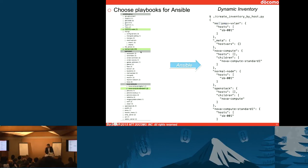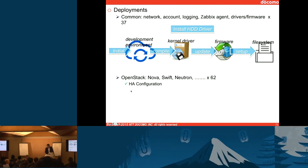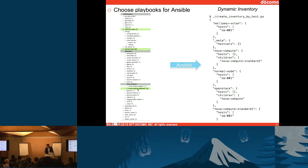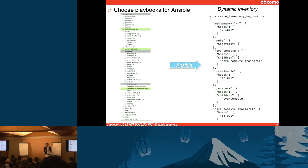As you can see, the normal node and Nova Compute Standard 1 appear in the inventory. Once operators select the playbooks, those playbooks are automatically applied to the hardware. Using this CMDB, we can understand the configuration of the hardware, the history of hardware failures, and the roles of the hardware.